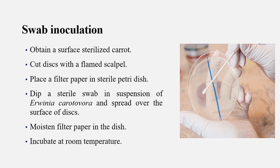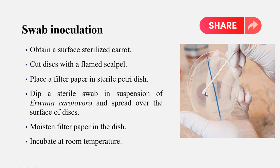For swab inoculation, first we have a sterilized cut made with a flame scalpel. Then we have a sterilized Petri dish with a filter on it. We take a sterilized swab, which is an absorbent cotton material, and dip it in the Erwinia carotovora suspension. Then we separate it from the cut surface, moisten it from the dish, and incubate at room temperature.